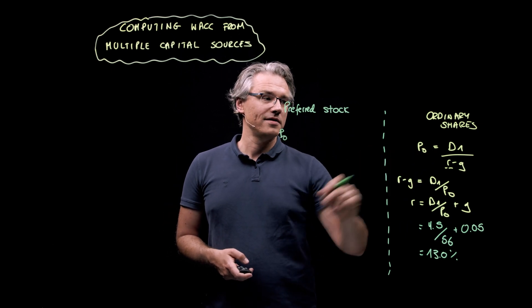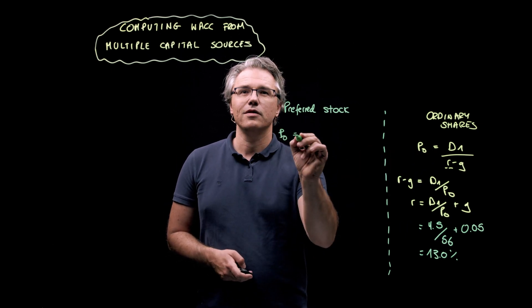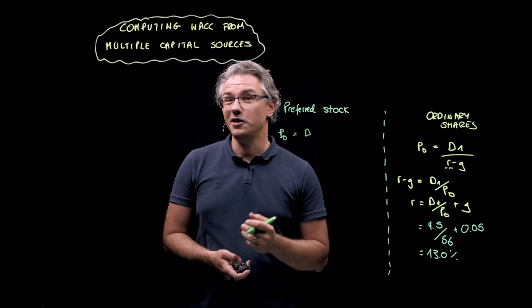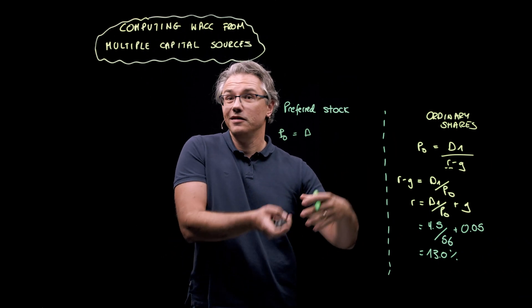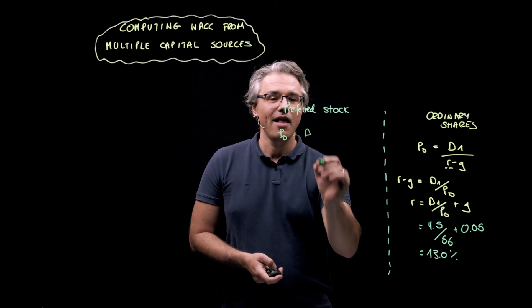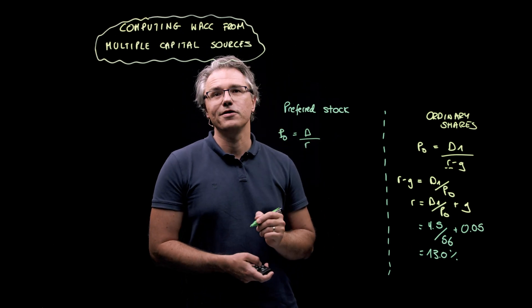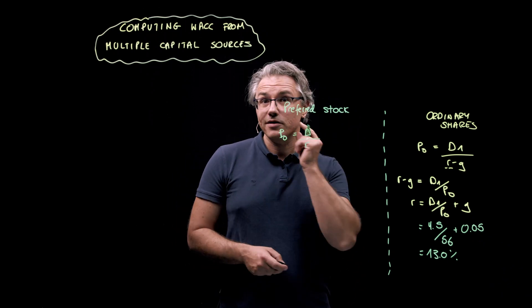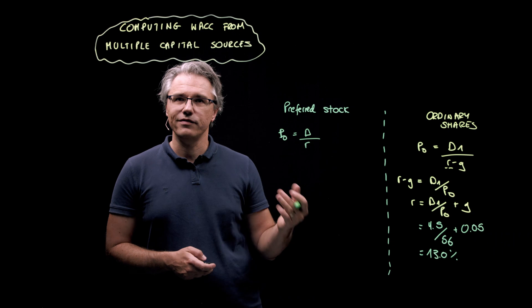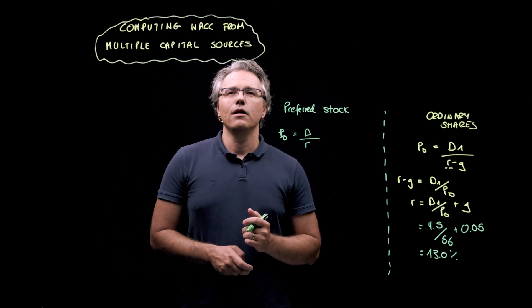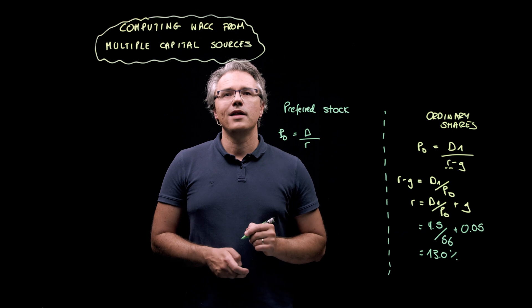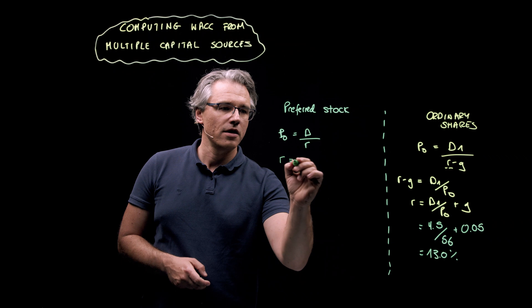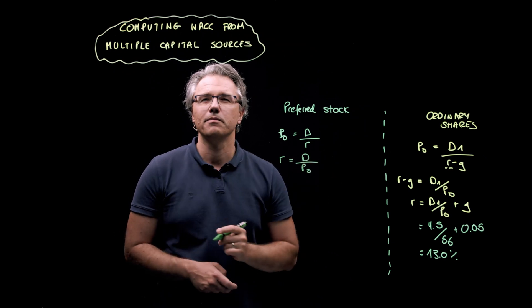Just like before, I'm going to express this as P0 equal to D1 or just D, the constant dividend. It doesn't have to be D1 because D0, D1, D2 is going to be the same thing, over R, the rate of return required by preferred stockholders. I don't have minus G because G, I'm going to assume, is zero. This dividend doesn't grow. Now, to get R on the left-hand side, I need to do a little bit of transformation. So, R equals D divided by P0.